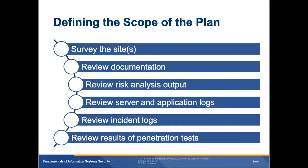The auditor will also review risk analysis output to understand system criticality ratings, which helps rank systems in the appropriate order for mitigation during the reporting phase. They might examine server and application logs looking for changes to programs, permissions, or configurations. They'll review incident logs to get a feel for problems and trends. And they'll review results of penetration tests — the tester prepares a report listing weaknesses found, and the auditor needs to make sure the audit addresses all items found in the vulnerability assessment or penetration test report.